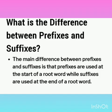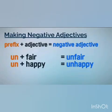Let us see how to make negative adjectives. Prefix plus adjective is equal to negative adjective. For example, 'un-' plus 'fair' is equal to 'unfair', and 'un-' plus 'happy' is equal to 'unhappy'.